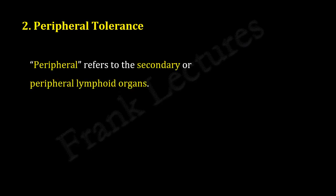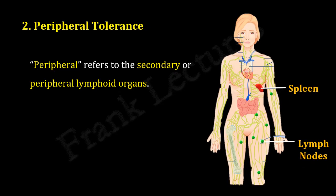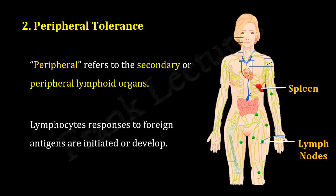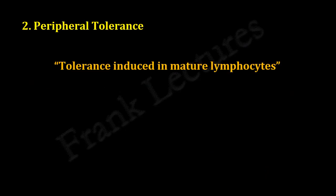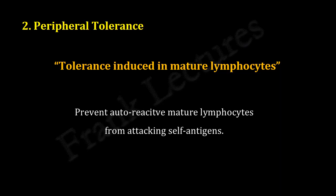The term 'peripheral' refers to the secondary or peripheral lymphoid organs, which include lymph nodes, spleen, and the components of the mucosal immune system. The main function of these secondary lymphoid organs is to capture and concentrate pathogens. These organs are the sites where circulating lymphocytes come in contact with antigens and lymphocyte responses to foreign antigens are initiated. So the auto-reactive lymphocytes that escape central tolerance will be found here. Peripheral tolerance is the tolerance induced in mature lymphocytes, and its mechanisms prevent auto-reactive mature lymphocytes from attacking self-antigens.